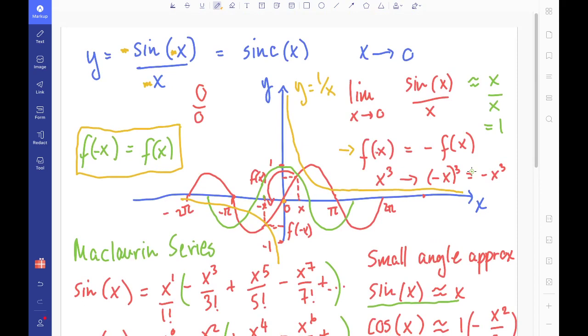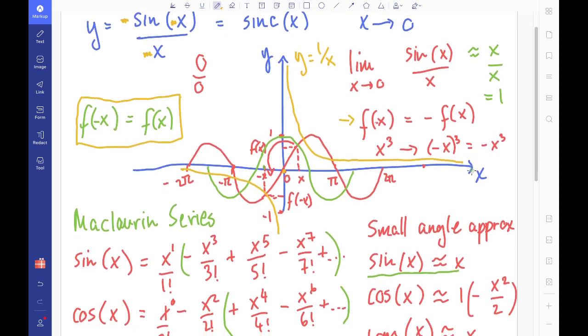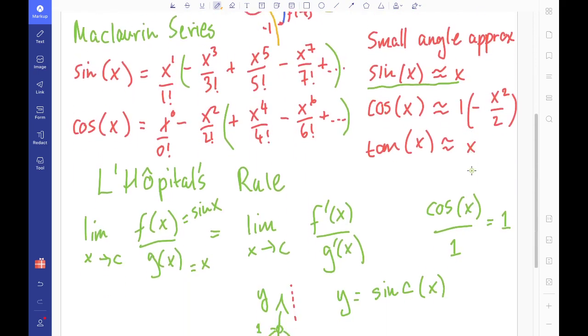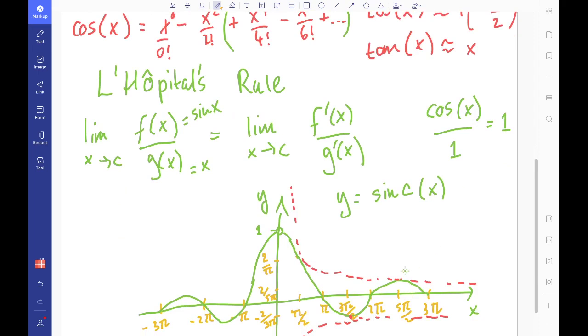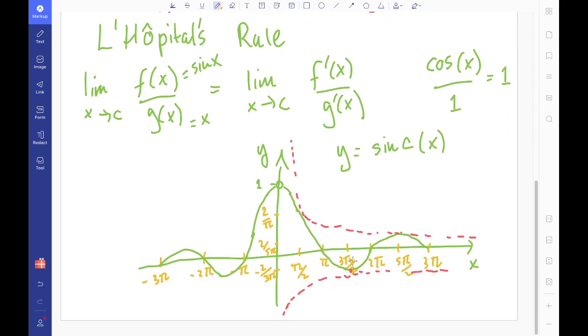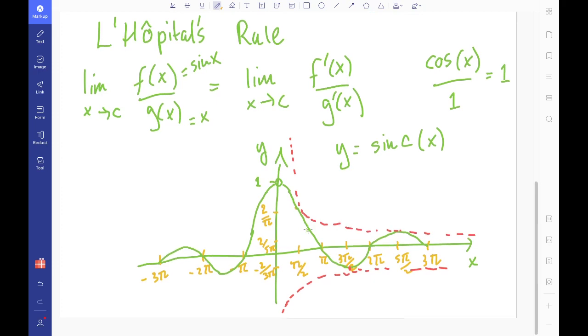In the last video we drew together the function y equals sine x over x, or y equals sinc x. And we showed that there were these maxima and minima, and we roughly plotted them at 3π/2, 5π/2, all of the odd half values of π, apart from π/2 and negative π/2, which we kind of showed are not maxima or minima.